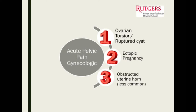Ovarian torsion is another concern, because if an ovary gets large enough and twists and loses its blood supply, the ovary may necrose and die. She usually only has two ovaries, and you don't want to keep surgically removing them because that's going to have implications for her future fertility.